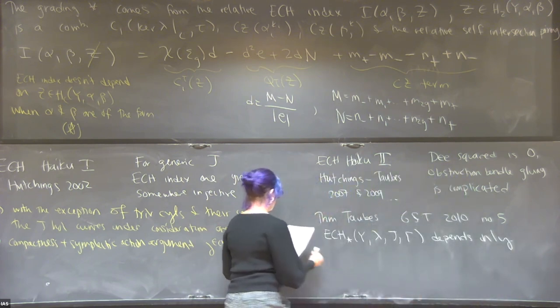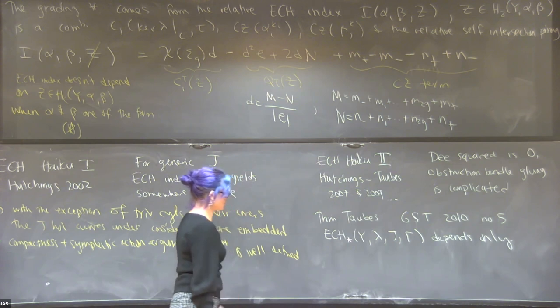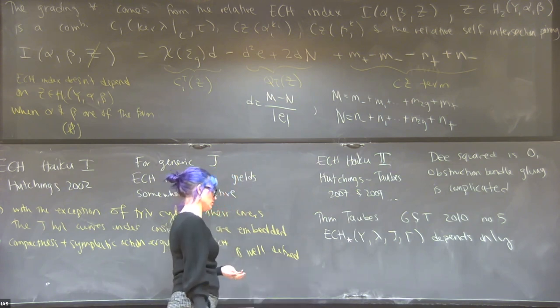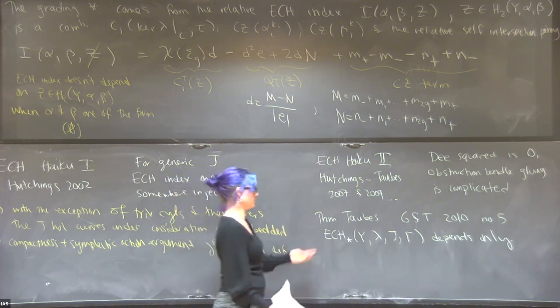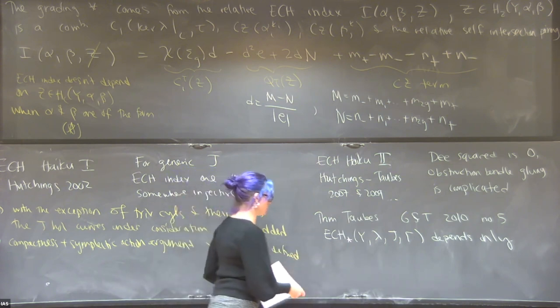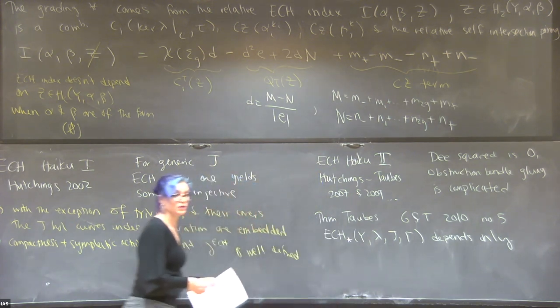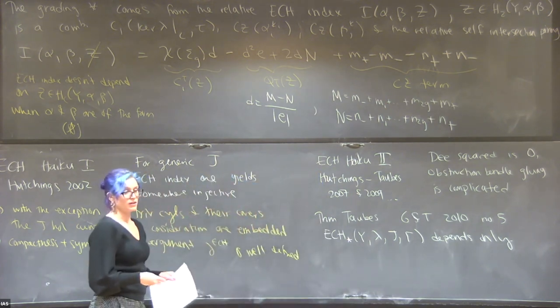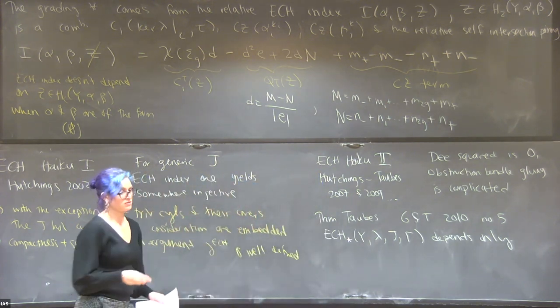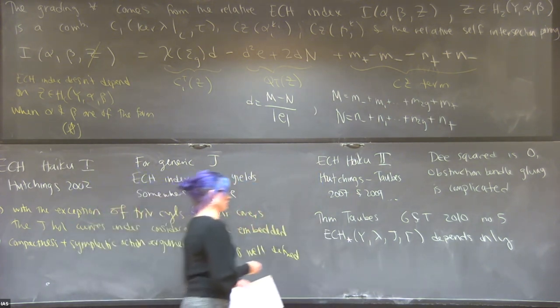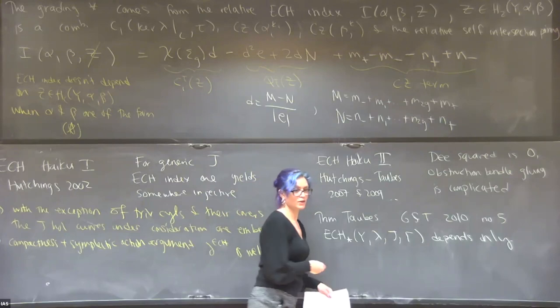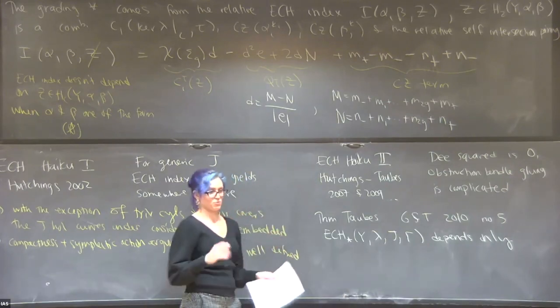Taubes does more than prove invariance of ECH — he also establishes an isomorphism between Seiberg-Witten Floer homology and embedded contact homology. The independence actually comes from that isomorphism; there's no direct proof.